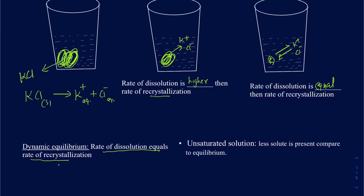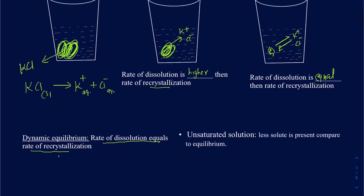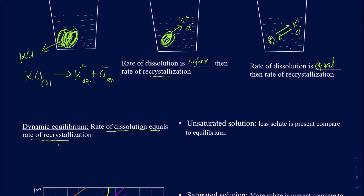At that point you can't increase the concentration of KCl in that given amount of water unless you heat it. At a particular temperature, the concentration of dissolved KCl is not going to change. Based on how much solute you can dissolve versus how much you have dissolved, you can characterize solutions into three different types.